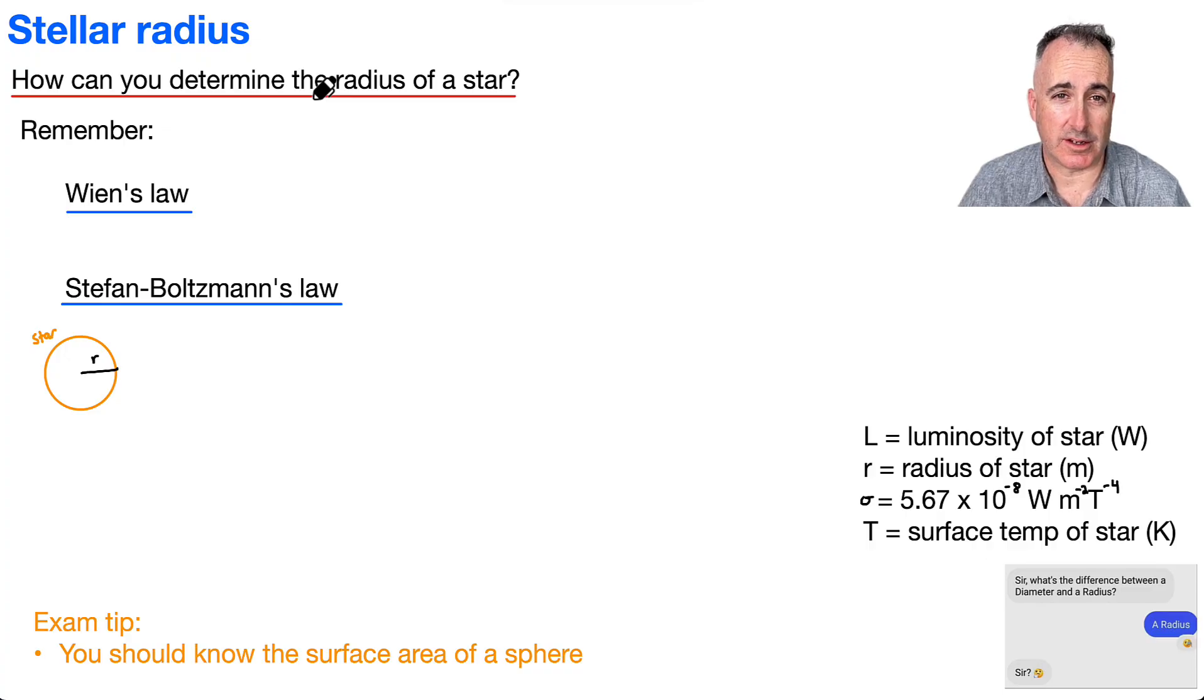Well, we don't need any new equations. We can actually use what we've already learned. If you remember Wien's displacement law, it relates black bodies, the peak wavelength, and the surface temperature. So we can use lambda basically to tell us T, the surface temperature.